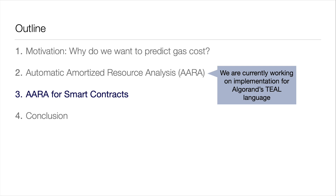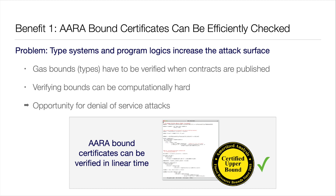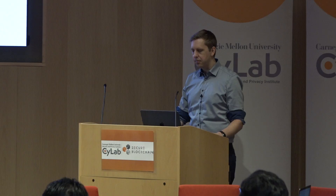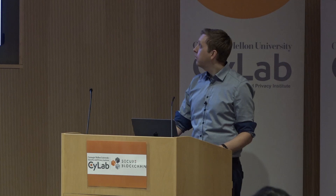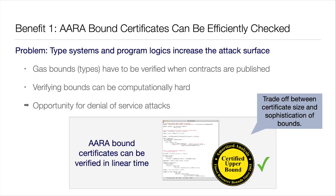First, it's potentially a problem to add a fancy type system or program logic to your smart contracts, because to get the benefits when you publish the smart contract, the resource bound has to be verified. Otherwise you don't get any benefit, and this is potentially another attack surface for denial of service attacks — if people publish smart contracts where the bound is very difficult to verify. Here we can produce certificates so that bound checking is linear in the size of the certificate. If somebody has a big certificate, you can charge for that. You can also set up the analysis so that certificates are small — linear in the size of the program — but there's a trade-off on the complexity of bounds you can get.